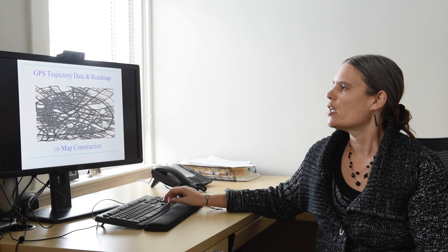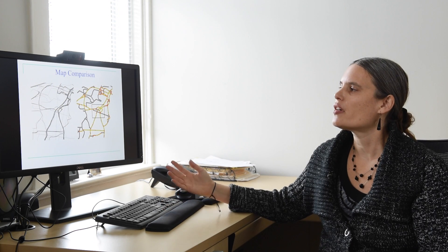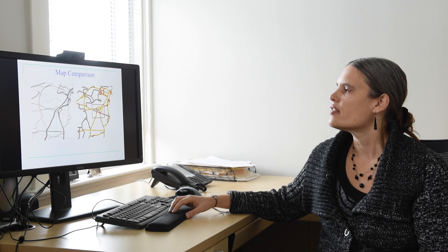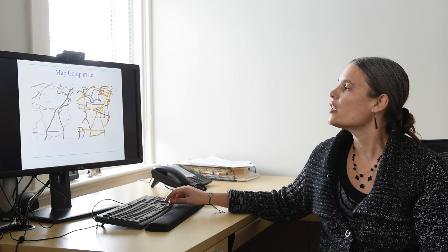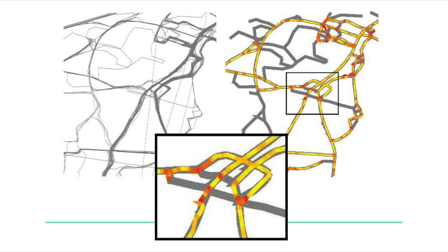Another question is: what if I have two different roadmaps that describe the same underlying road network? Where do they differ? Which one is the better roadmap? Here on the left, you see a set of trajectory data, and we ran two algorithms to construct two different roadmaps from it, which are shown overlaid on the right. We defined a distance measure between roadmaps that is based on persistent homology, which identifies the local distances between the roadmaps. A red color indicates a large distance and a yellowish color a smaller distance, and our distance measure really picks up the differences between the roadmaps quite nicely.